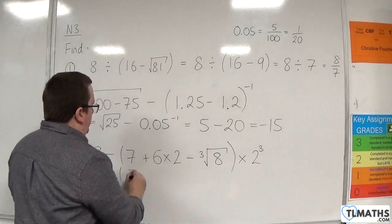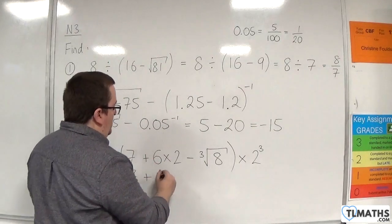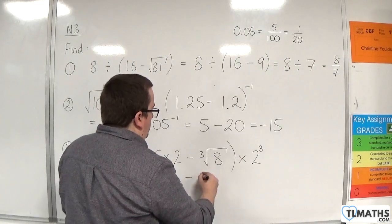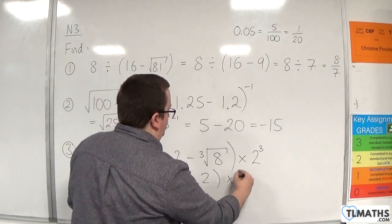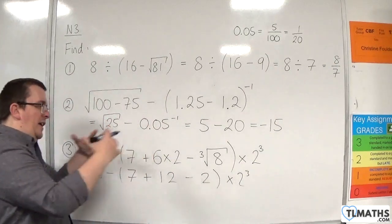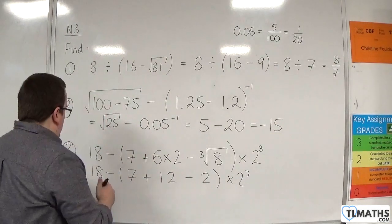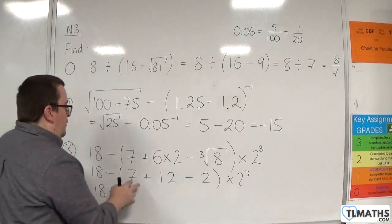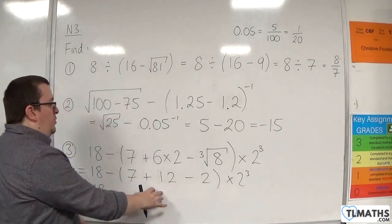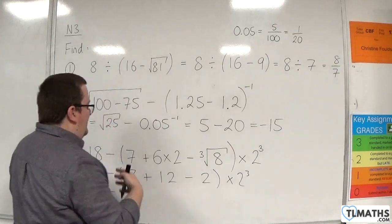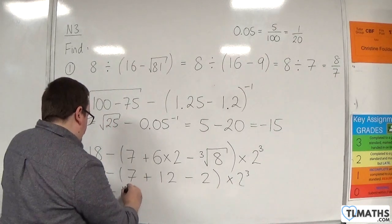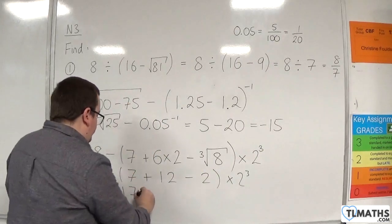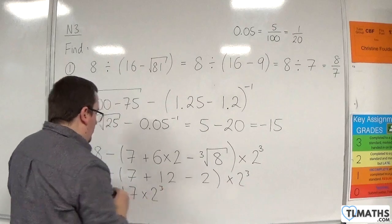You can do this. So 7 plus 6 times 2 is 12, cube root of 8 is 2. If you want to take two steps over it, you can. We have 18 take away. Now we've got 7 plus 12, which is 19, take away 2 is 17. So that's in the bracket, and then we've got the 2 cubed on the outside.